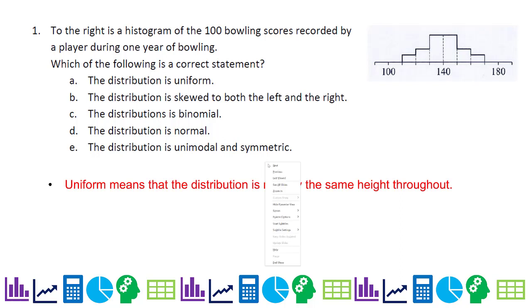You can see that there's a peak right here, so that's not uniform. If it was flat across, that would be uniform. So A is not the correct choice.